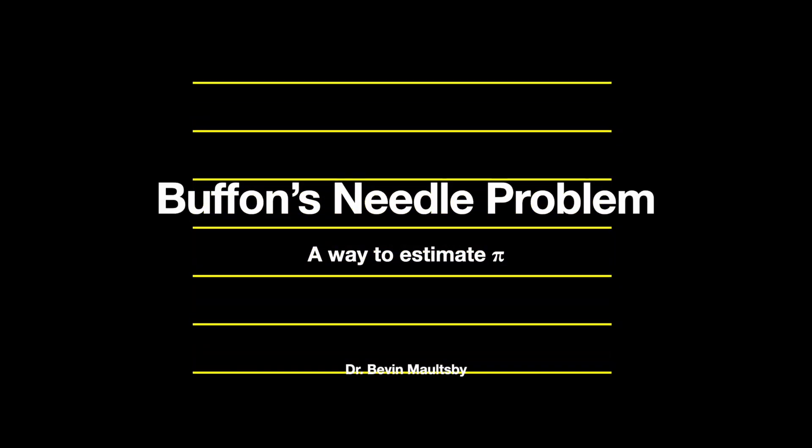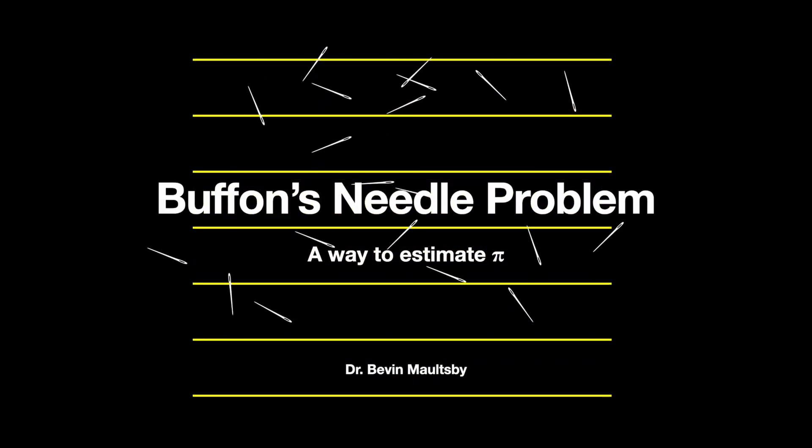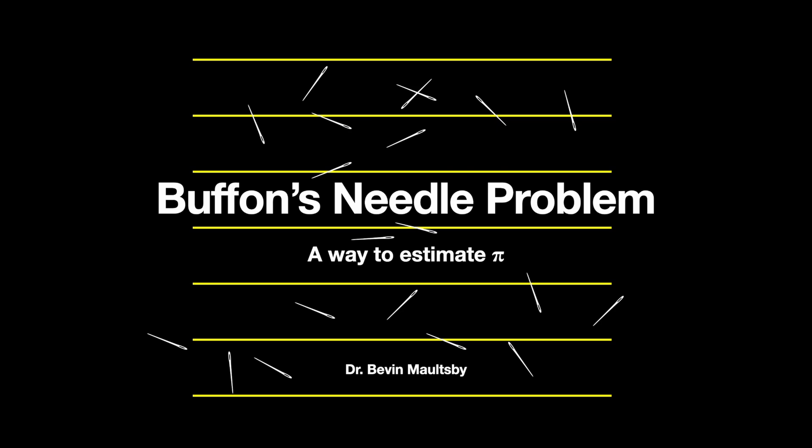In this video, we are going to look at an intriguing problem in probability called Buffon's Needle Problem. I like this exercise because it combines elements of probability, geometry, and calculus. I'm going to try to present what I think is the simplest way to understand this problem, and the only calculus skill that you need is just a basic integral. In particular, we are going to estimate the value of pi using just the notion of the average value of a function.